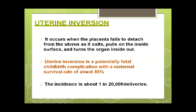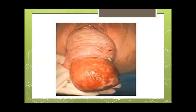Uterine inversion is potentially fatal but has a good survival rate if recognized promptly, though maternal morbidity is significant. The incidence is about 1 in 20,000. As shown in the diagram, the vaginal wall is visible and the uterus has become inside out. A constriction ring develops which will prevent the uterus from being replaced back to its normal position.